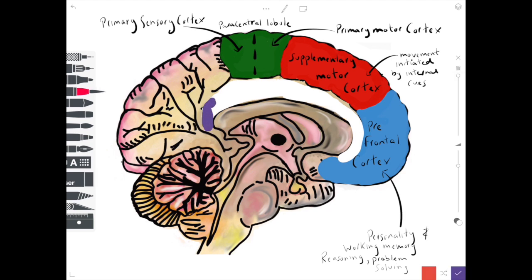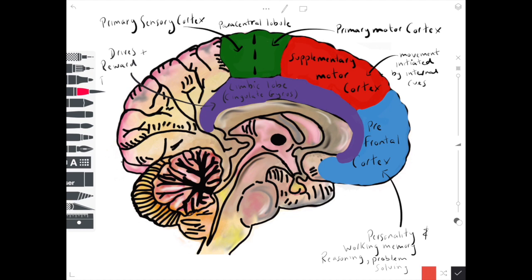It has strong connections with this area in purple which is a limbic area of cortex known as the cingulate gyrus. This is responsible for reward behaviours, our drives and instincts, and our pleasure centres.